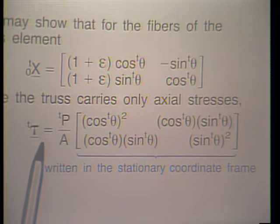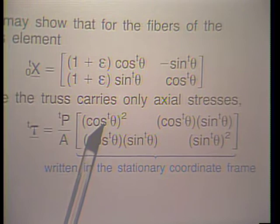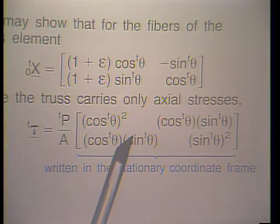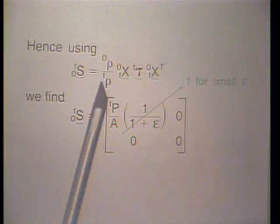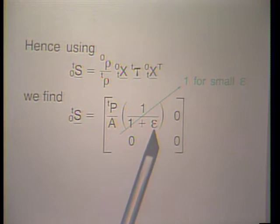If theta is equal to zero, we have only a 1 here and all other components drop to zero. Using our general formula to evaluate second Piola-Kirchhoff stresses from Cauchy stresses, since epsilon is small we set that factor equal to 1, and we obtain directly that the only non-zero stress component in this stress tensor is the S₁₁ component.